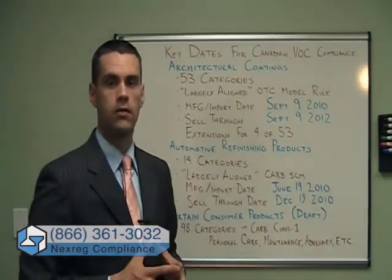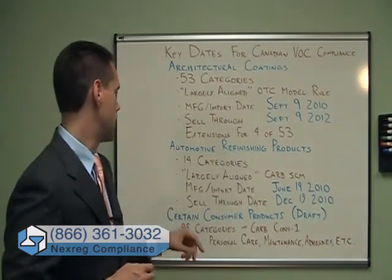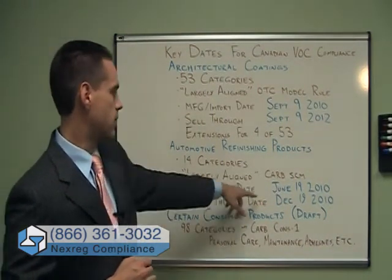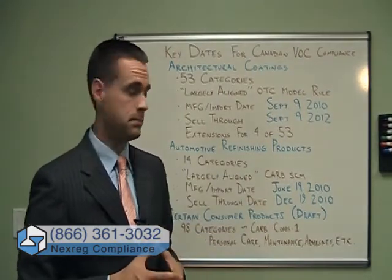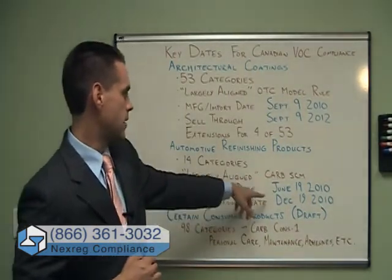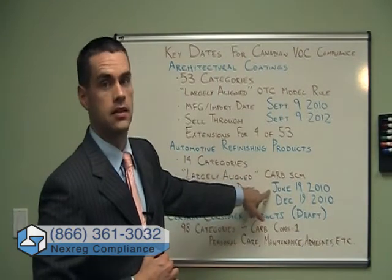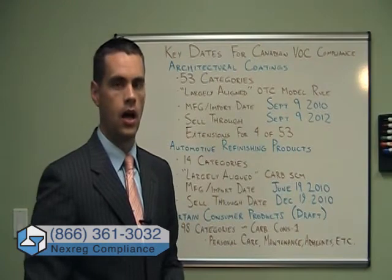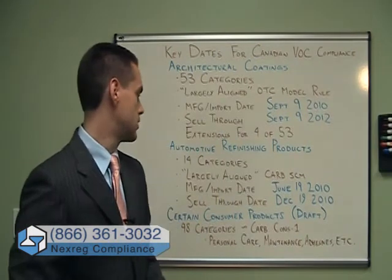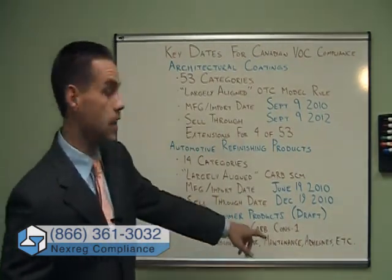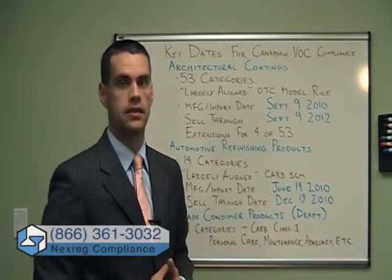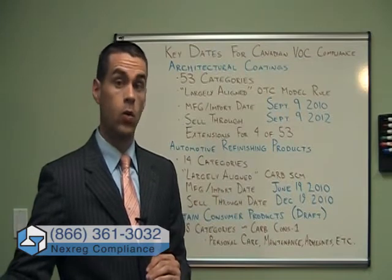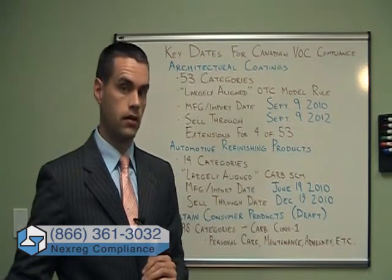The second set of regulations is for automotive refinishing products. This covers 14 different categories and is largely aligned with the CARB SCM rule. Your manufacturing import date has already passed — June 19th, 2010 — meaning you're expected to be compliant already with the new limits. The sell-through date is coming up very quickly: December 19th, 2010. So there's not a whole lot of time left to sell old inventory compliant under the old rules.